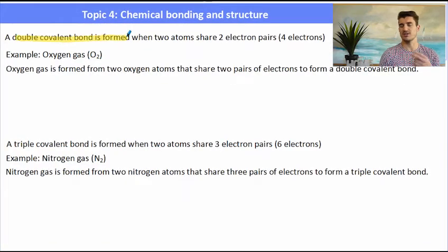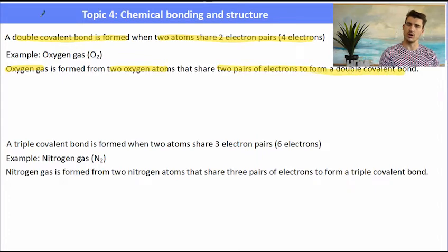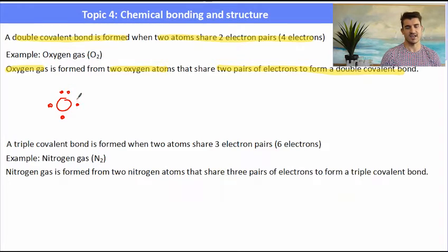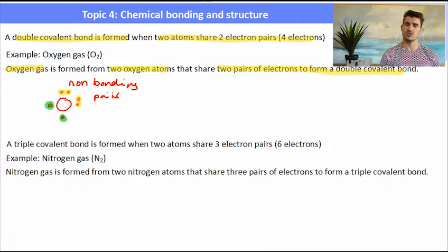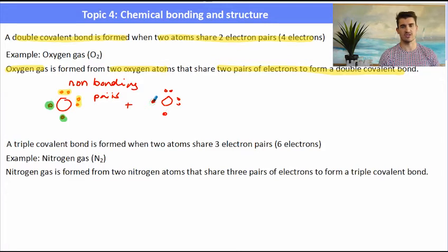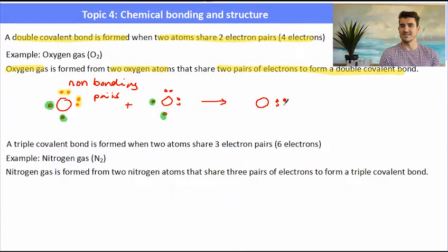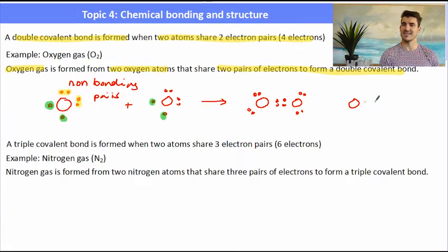A double covalent bond is formed when two atoms share two pairs of electrons, or four electrons. For example, oxygen gas is formed between two oxygen atoms that share two pairs of electrons to form a double covalent bond. Oxygen has six electrons in its outer shell, so it has two electrons that are paired — described as non-bonding electrons. Paired electrons are unlikely to form a covalent bond. That leaves oxygen with two unpaired electrons, which we describe as its bonding electrons. Another oxygen atom comes along — it also has two electrons it can share, so they form two bonds together, sharing those two electrons to form a double covalent bond. They're sharing four electrons — two pairs.